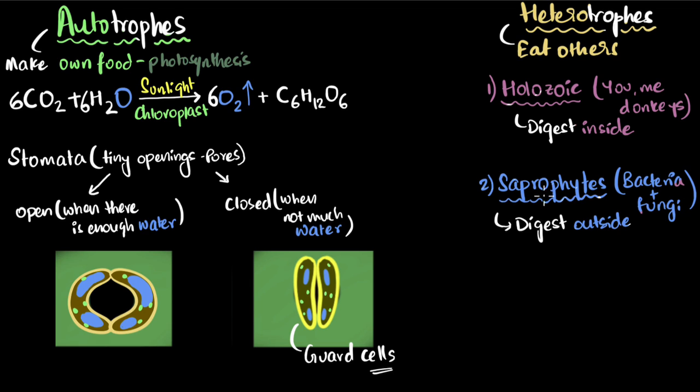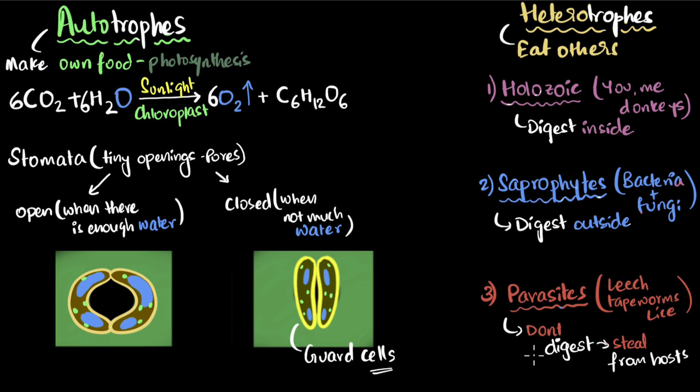But what about organisms that can neither digest the food inside nor outside? What will they do? Well, they are called parasites. They will just steal the nutrients—the digested nutrients—from their hosts.